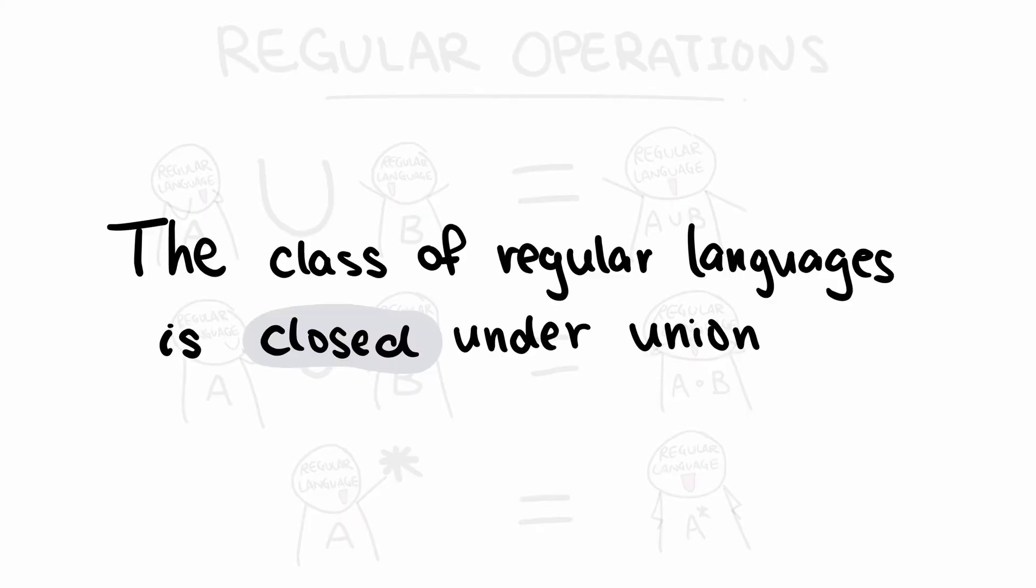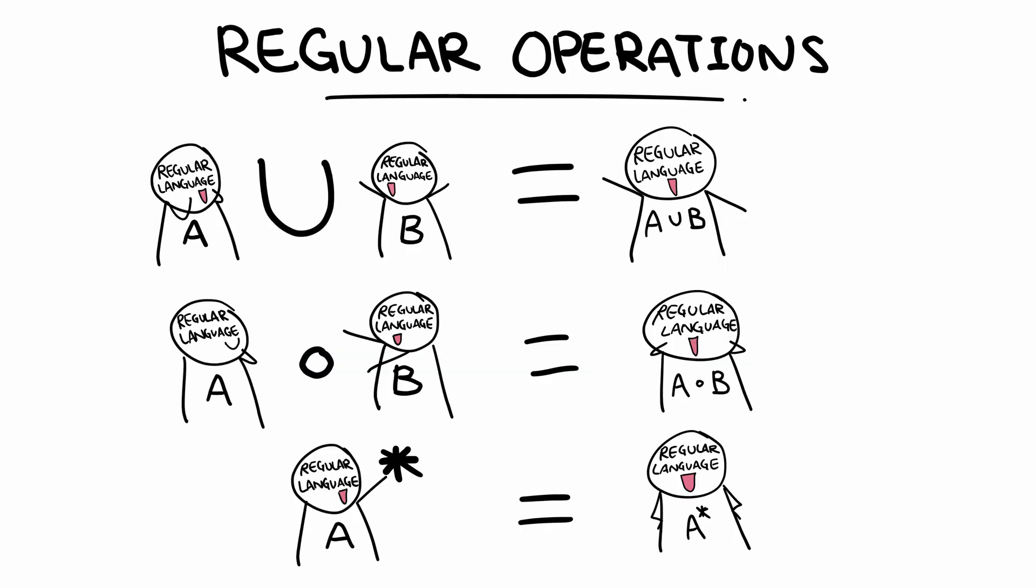Formally, we say that the class of regular languages is closed under these operations. Now, since the resulting languages are regular languages, by definition, we must be able to construct finite automata that recognize these languages.